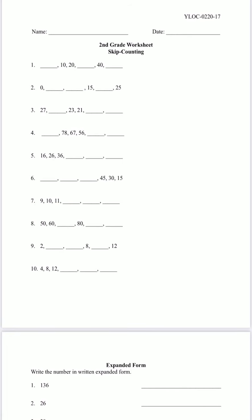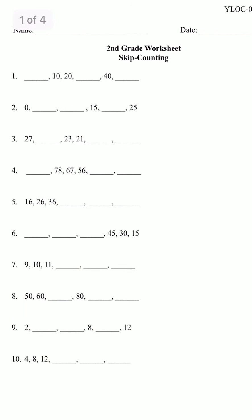Hi, today we're starting with skip counting. So let's try number one. We have blank, 10, 20, blank, 40, and then blank. So we have to look at these two numbers. We can see that we're adding 10, right? So 20 plus 10 is going to be 0 and 3, so 30.